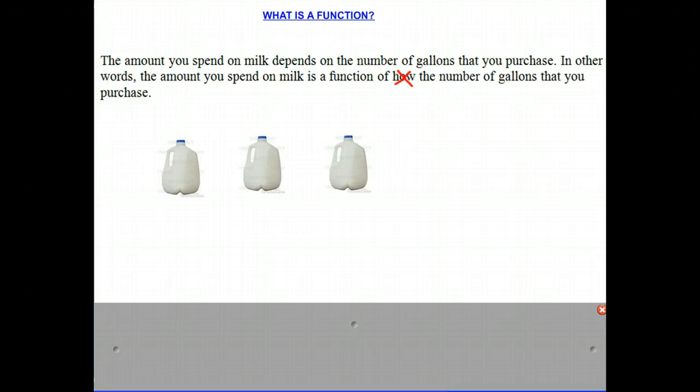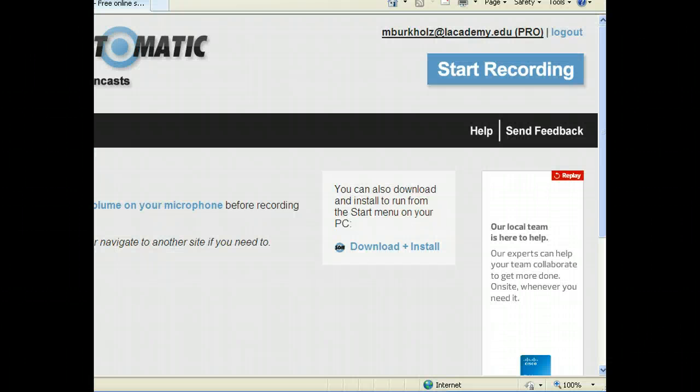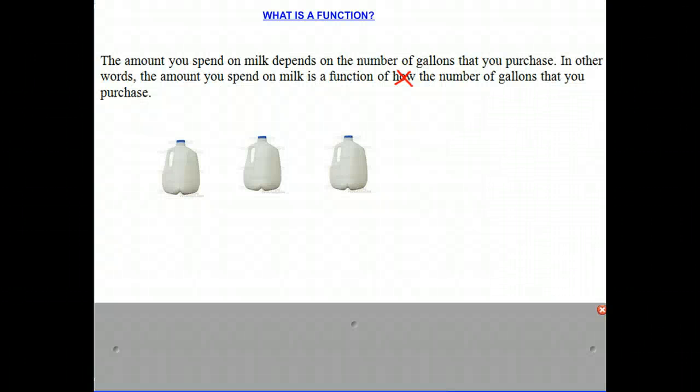Just so you know, the input here is the number of gallons that you purchase. In this case, we have three gallons. The output is the amount you spend. So one input, one output. One gallon of milk is $3.50. Two gallons of milk is $7.00. Three gallons of milk is $10.50.